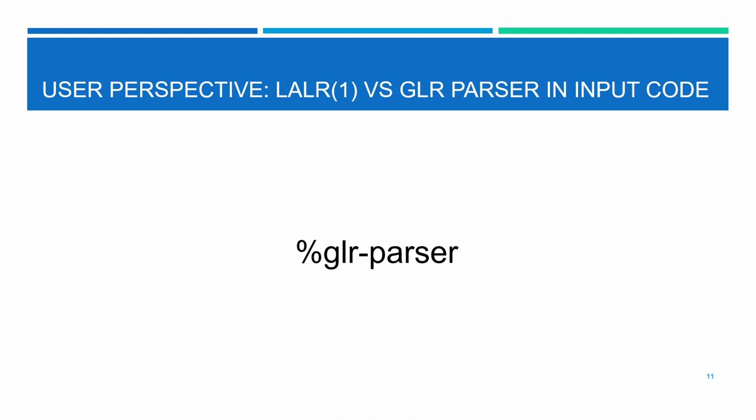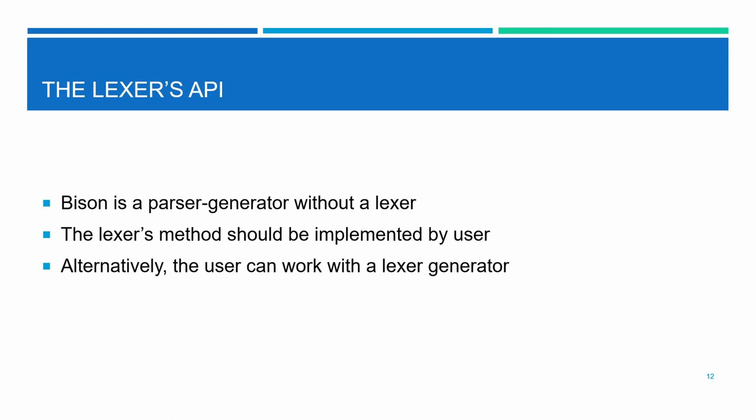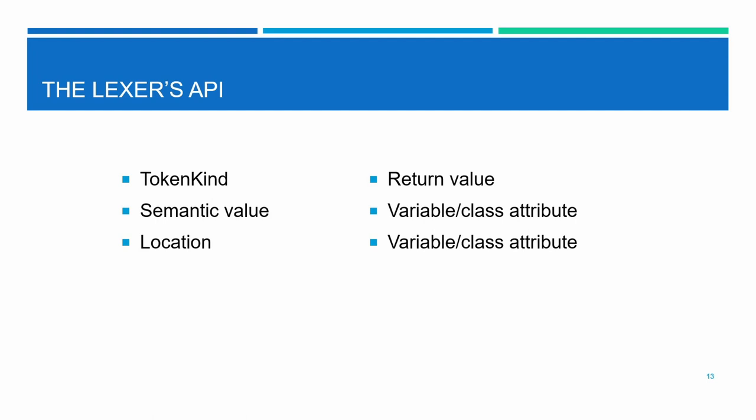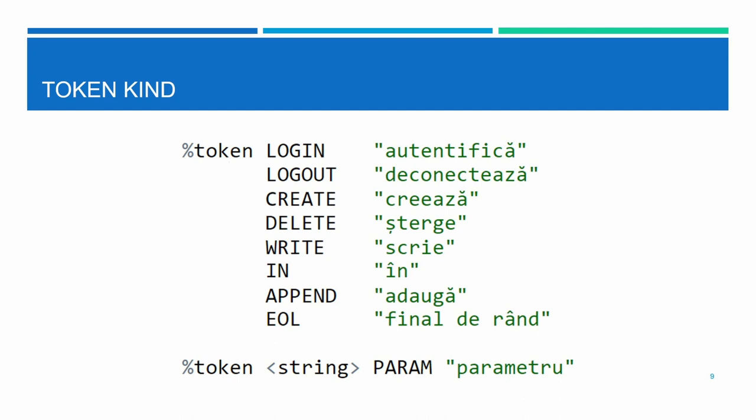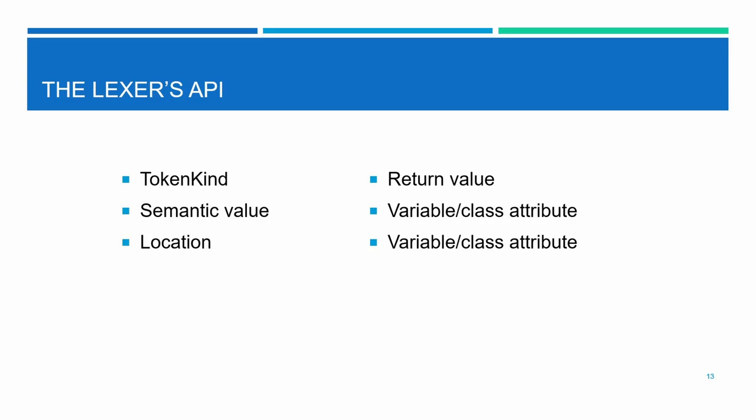Let's talk about the lexer API. Bison doesn't have an associated lexer, so you as the user are supposed to implement one or use a lexer generator. You should provide information about three entities: the token kind, the semantic value, and the location. There are tokens with invariant values — for example, a login token that will always have the value 'login' — and tokens with variant values, where the parameter can be anything (user, password, file, etc.). In that case, the semantic value should contain that variant value.